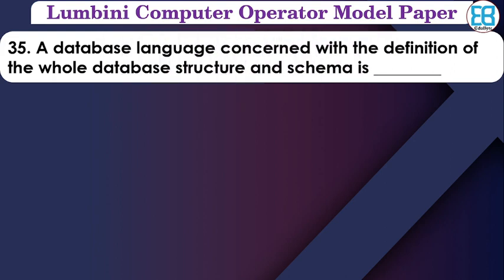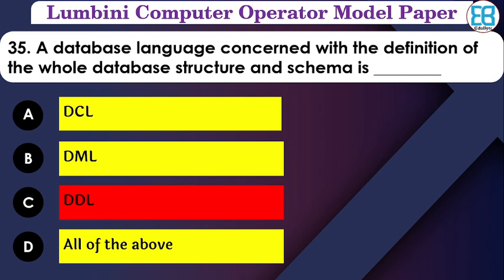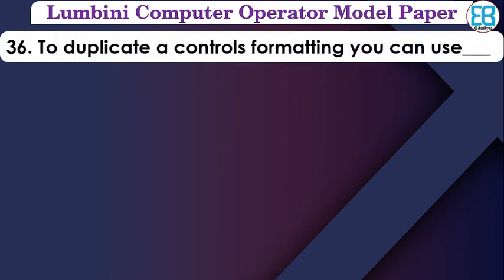Which database language is connected with the definition of the whole database structure and schema? The options are: DCL, DML, DDL, all of them. The correct option is DDL — Data Definition Language — which is related to defining the whole database structure.